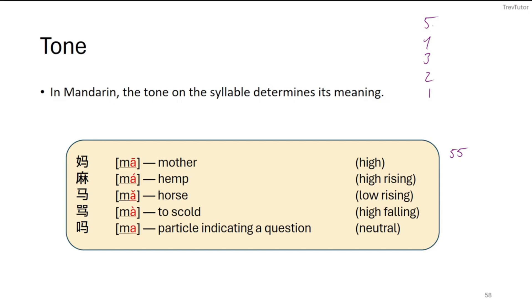The first number is where it starts, and the second number is where it ends. So this is a high, it's a five-five. While hemp, a high rising, might start at three and go to five, so starts mid goes high. With horse, this is low rising, so it kind of goes from two to four. From high falling, this would start at five and go down to a three or a two. And then for any particle indicating a question, neutral would just be a standard three, or perhaps even lower. So those are another way that you can represent tones, although in English, we don't need to care about these as much.